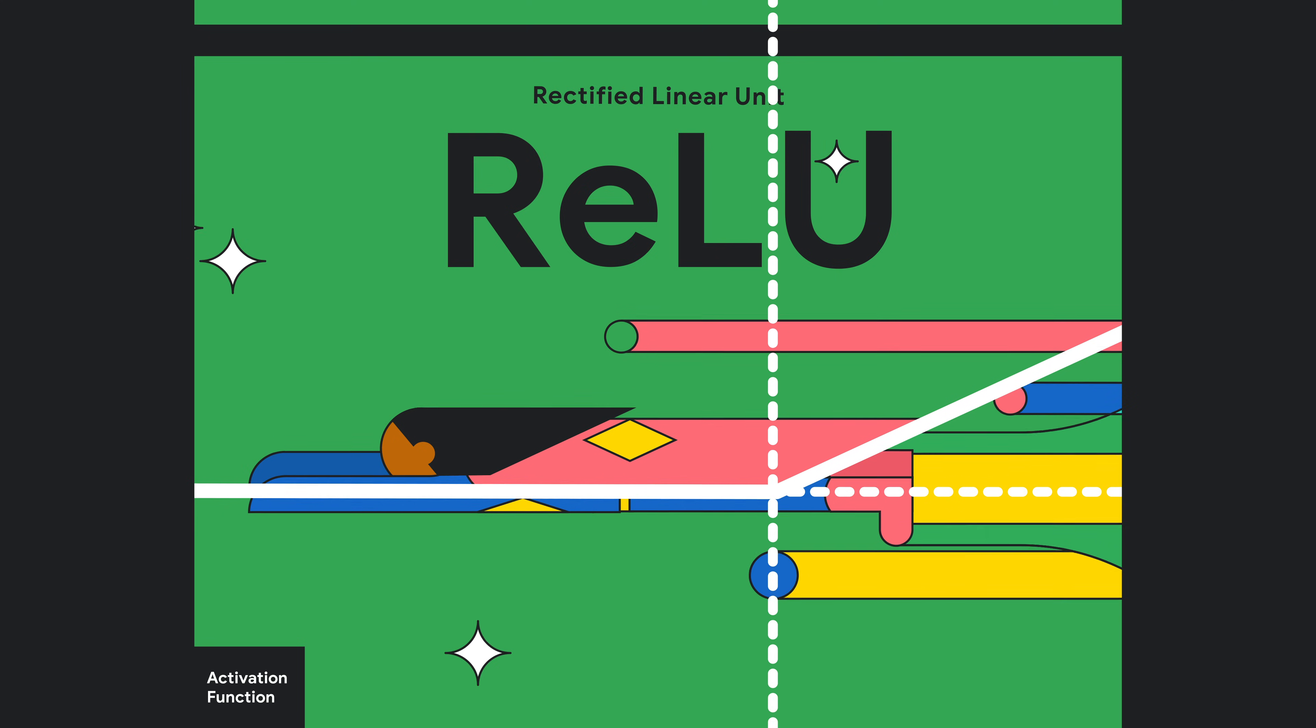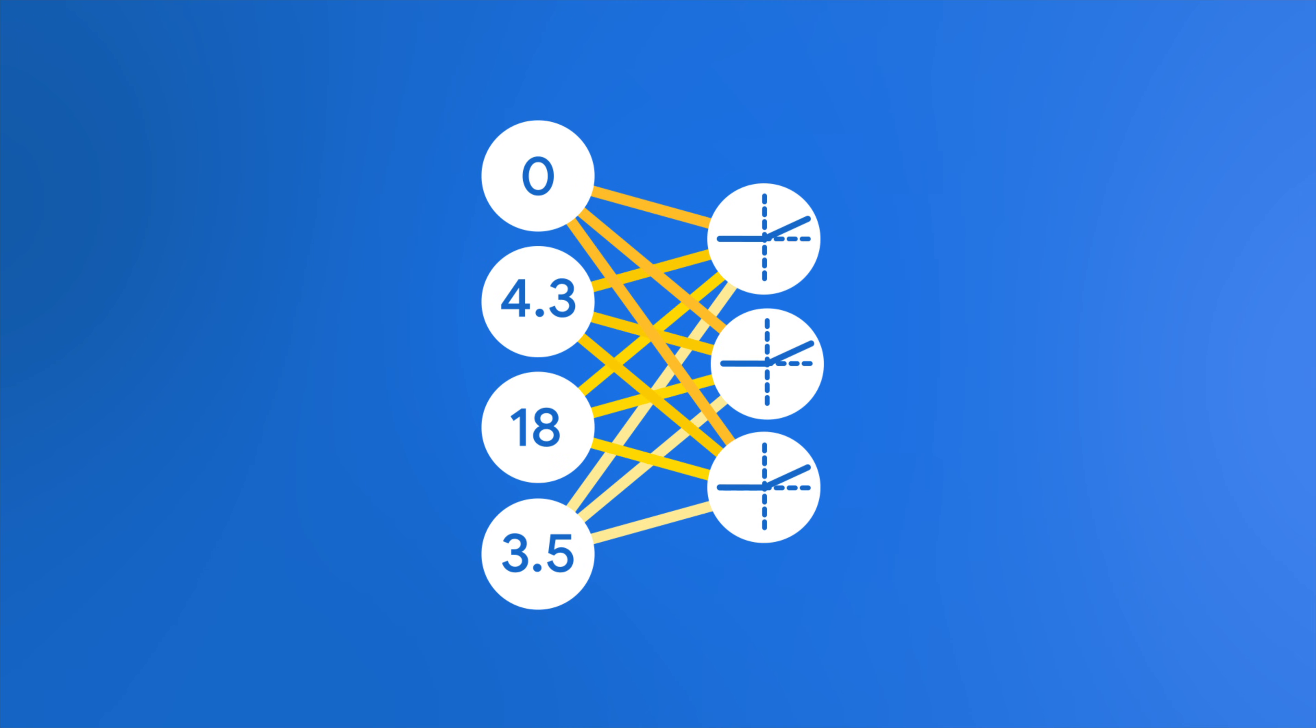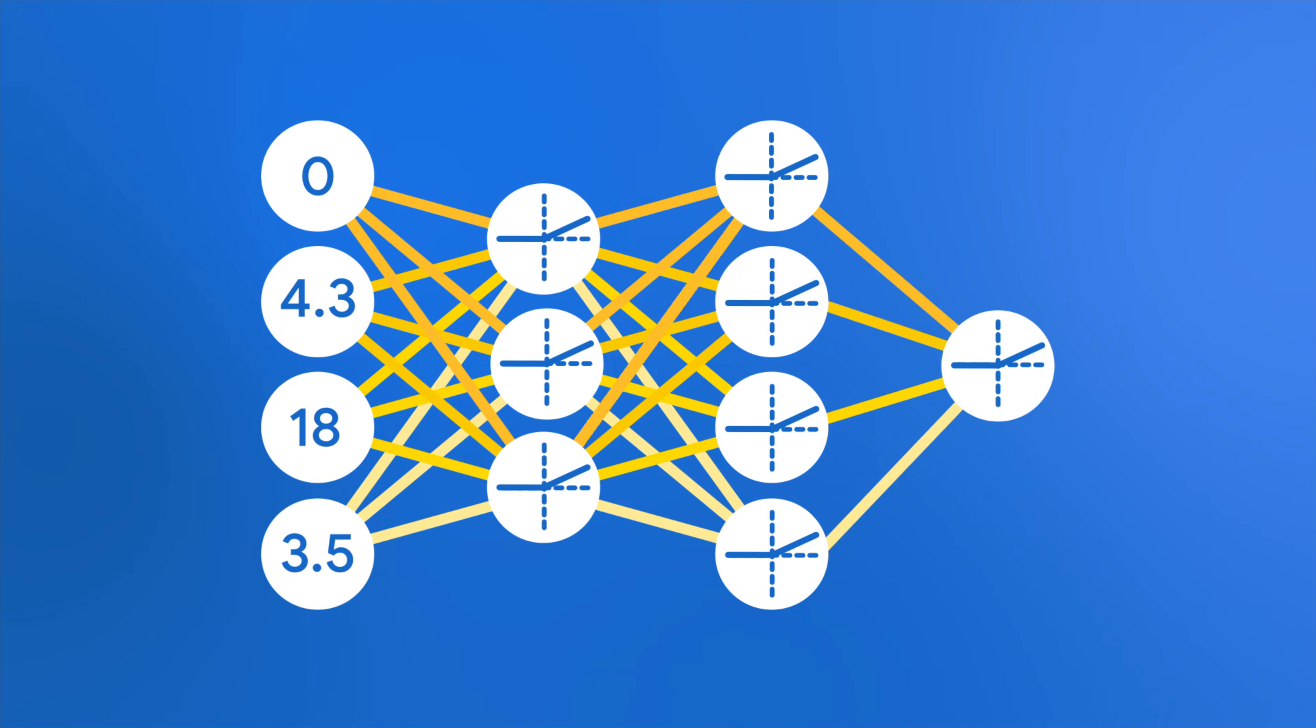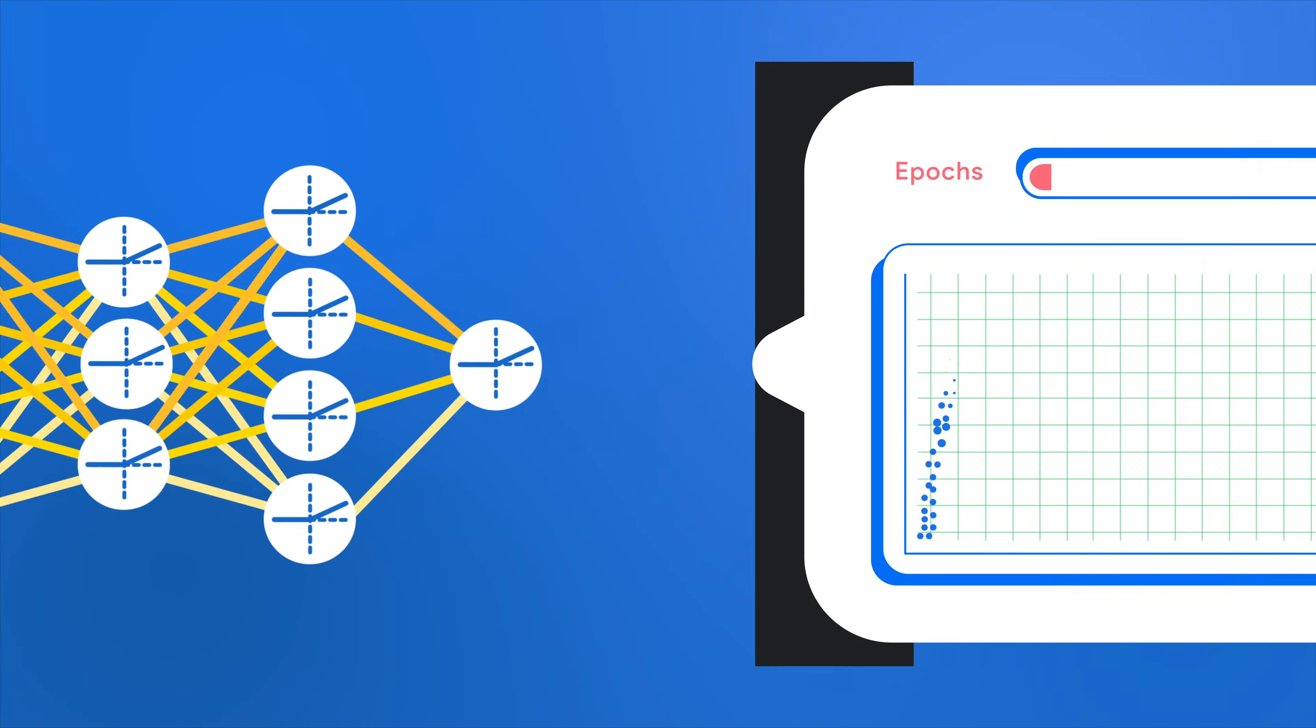If we apply this activation function before outputting the final value for each node in our network, our model can automatically learn the correct nonlinear relationship between features and the label during training.